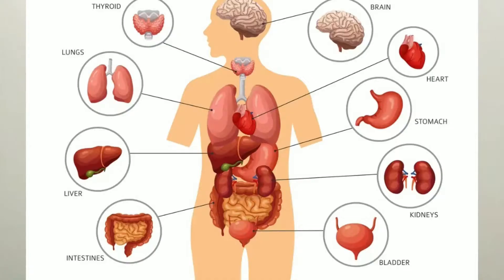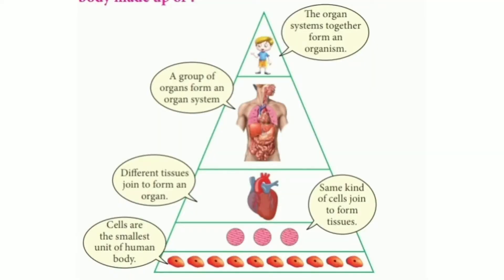Our body has many parts working together and they all function as one unit. The basic unit of a human body is called a cell — a cell is a basic living unit of the body. Similar cells come together to form tissues, a group of tissues come together to form an organ, organs come together to form an organ system, and all these organ systems work together so that our body functions well.